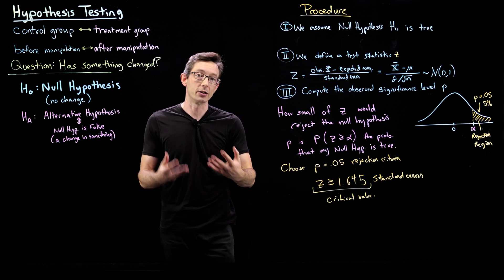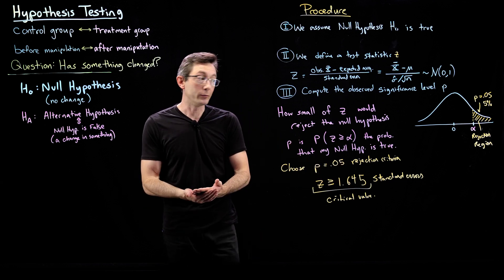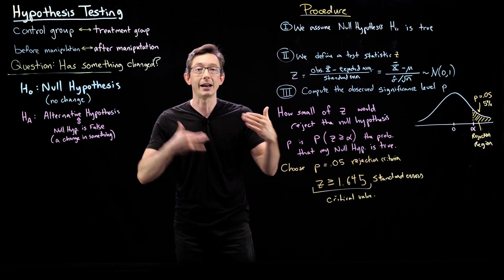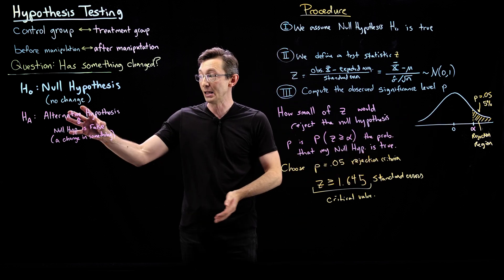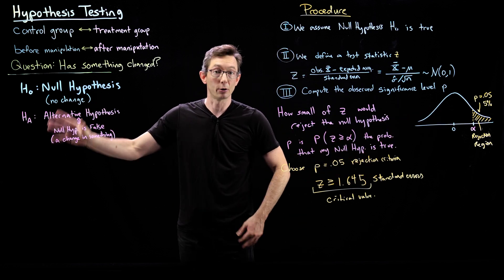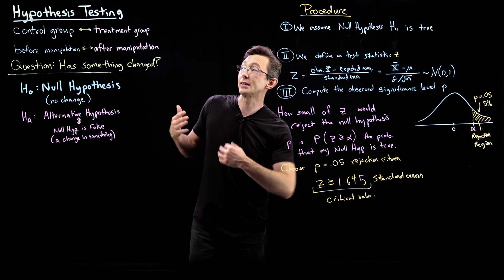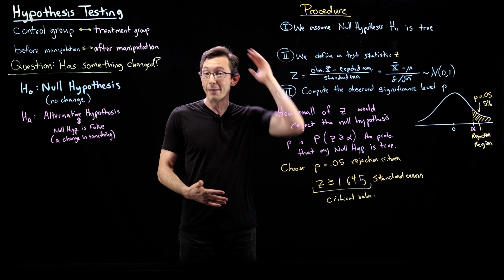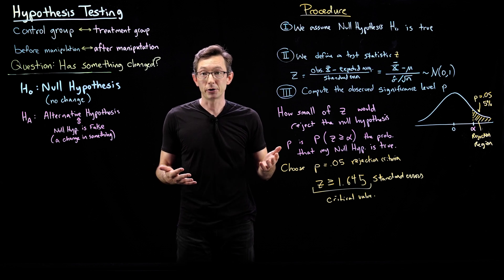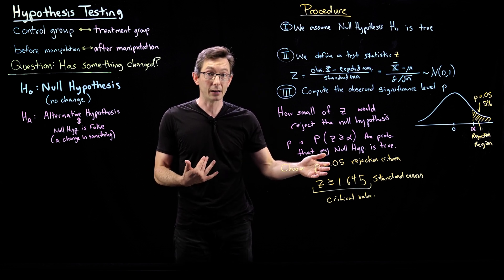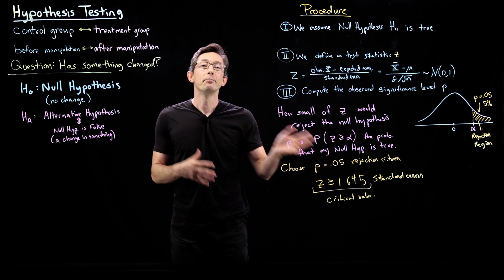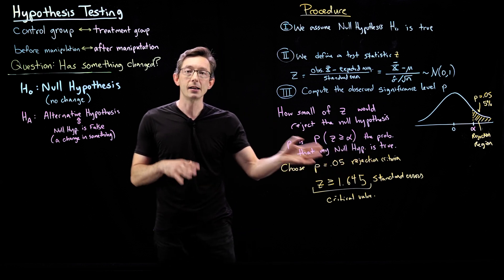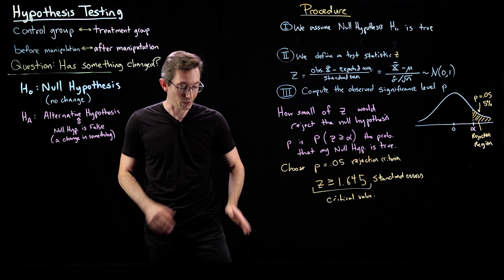You can design these rejection regions and rejection criteria based on how significant you want your results to be before you make decisions or publish those results. For some things, like certain medical treatments, you need strongly statistically significant results. Other things that are less critical, you might be fine with 95% confidence. It depends on the application.